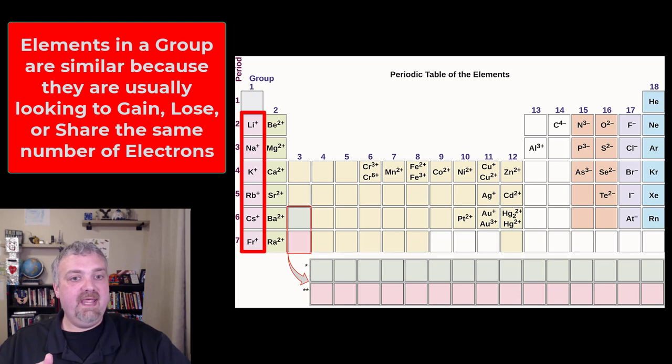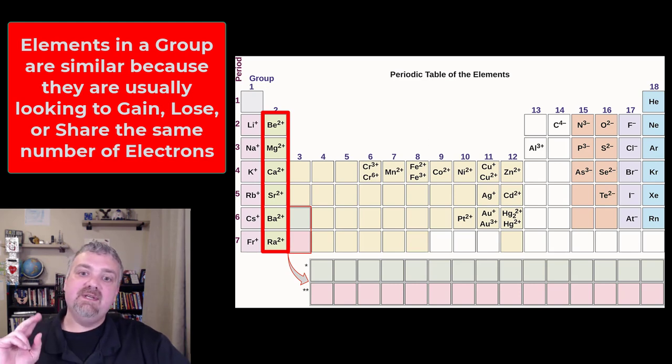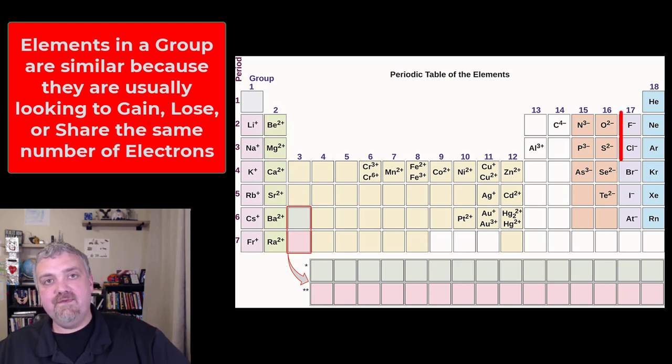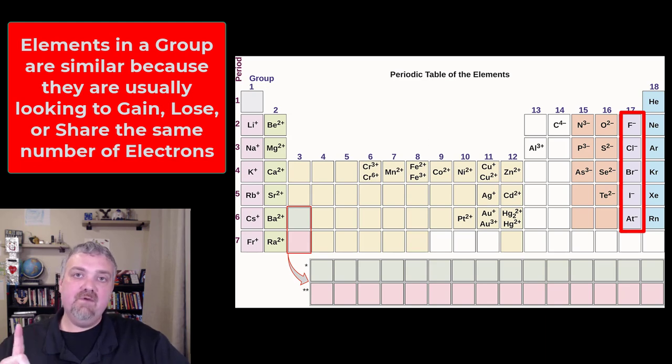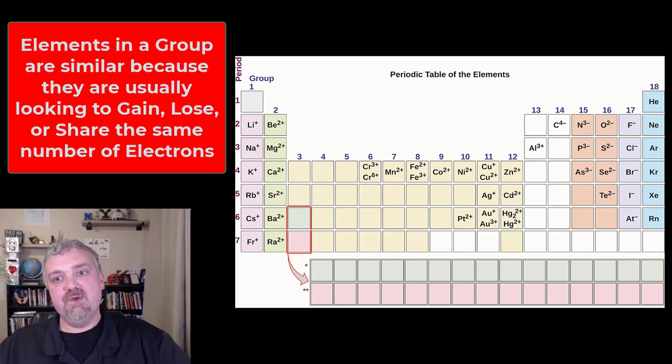But you see on the far left side, that group 1A, all of them have a plus 1 charge, meaning they want to get rid of one electron. Group 2A, 2 plus charge because they want to get rid of 2 electrons. Over on the far right, we see the halogens there. They have a minus 1 charge because they only want to gain 1 electron. So that's why organizing them in groups is so critically important because they have very similar behaviors.